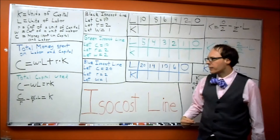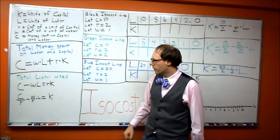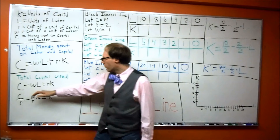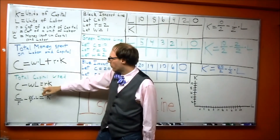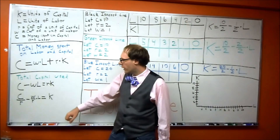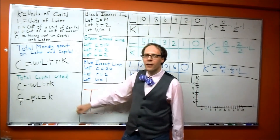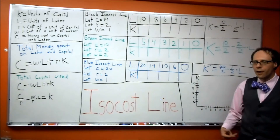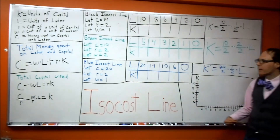We can find the different combinations of labor and capital used by rewriting this equation to equal capital. To isolate the units of capital, we first subtract W times L from both sides to get C minus W times L equals R times K. Then we divide everything by R. This gives us an equation which only equals the units of capital used in our combination of inputs. Now to draw these isocost lines, we're going to plug in some numbers and see the outcomes.